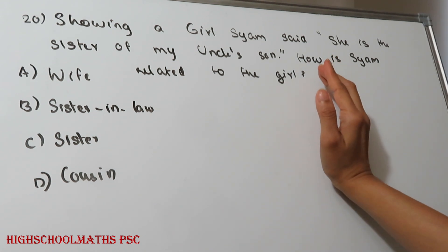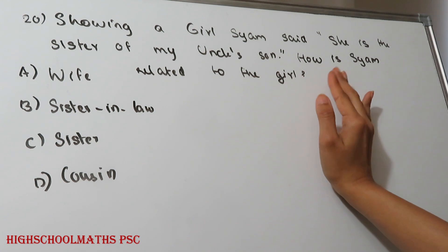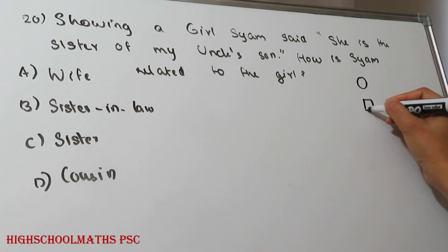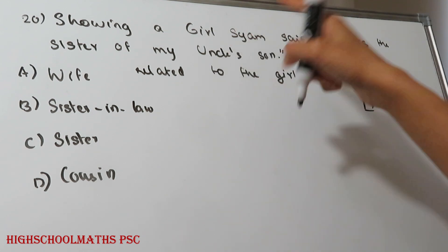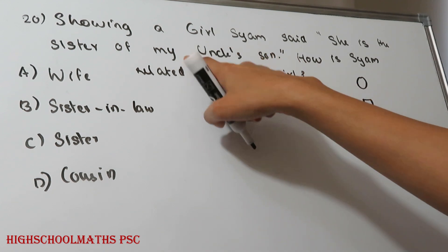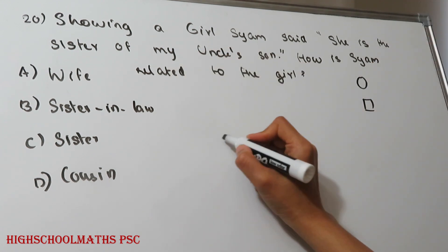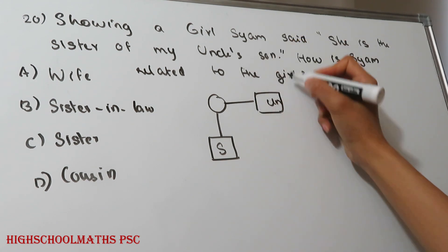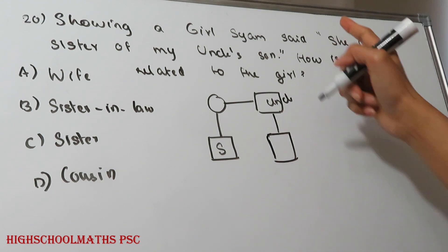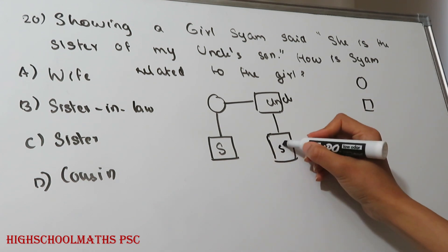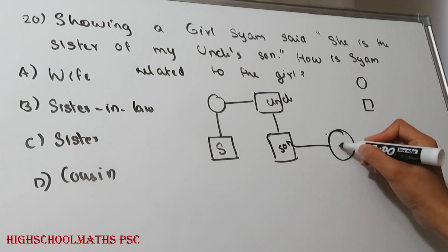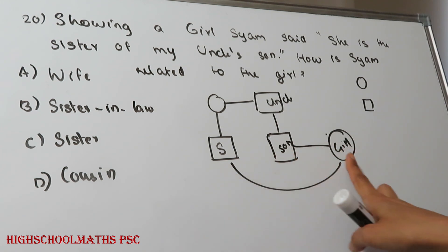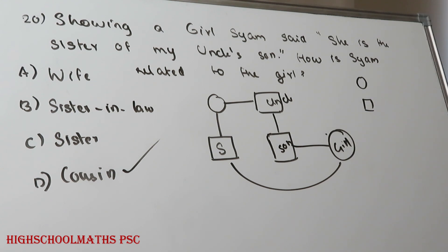The last question: Showing a girl, Sham said, 'She is the sister of my uncle's son.' How is Sham related to the girl? Sham's uncle's son is Sham's cousin. The girl is the sister of that cousin. So the girl is also Sham's cousin. We will discuss more PSE 12th level exam questions in the next video.